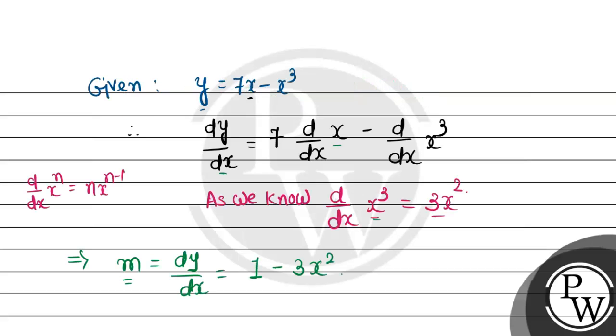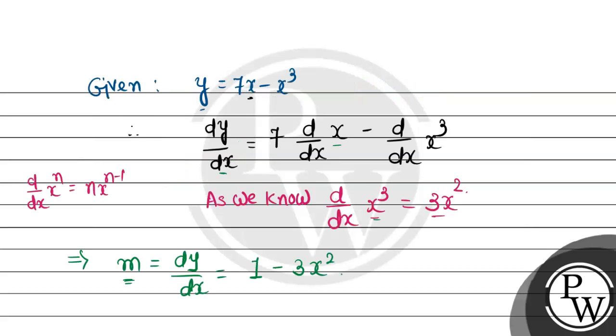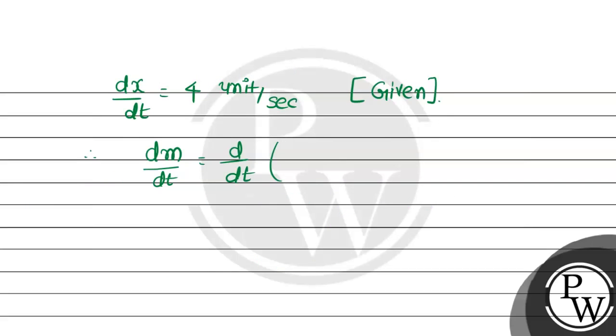Now, I need the change in slope with respect to time. So, dm upon dt equal to d upon dt. Our slope expression is 1 minus 3x squared. So, d upon dt into 1, minus 3 constant, d by dt x squared.